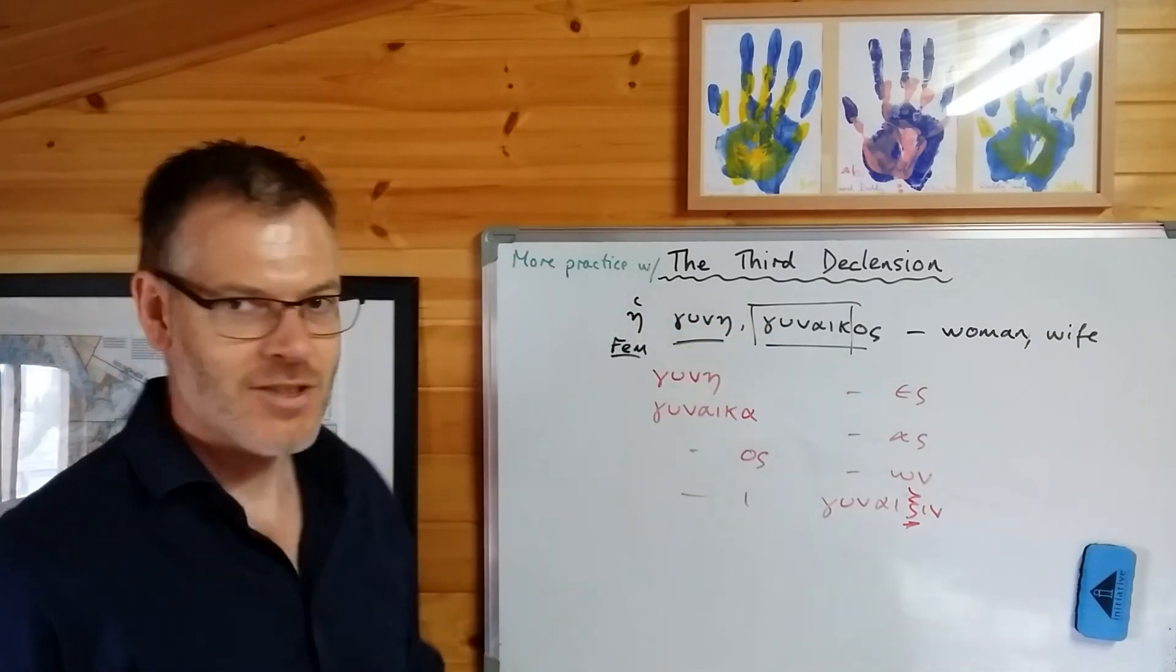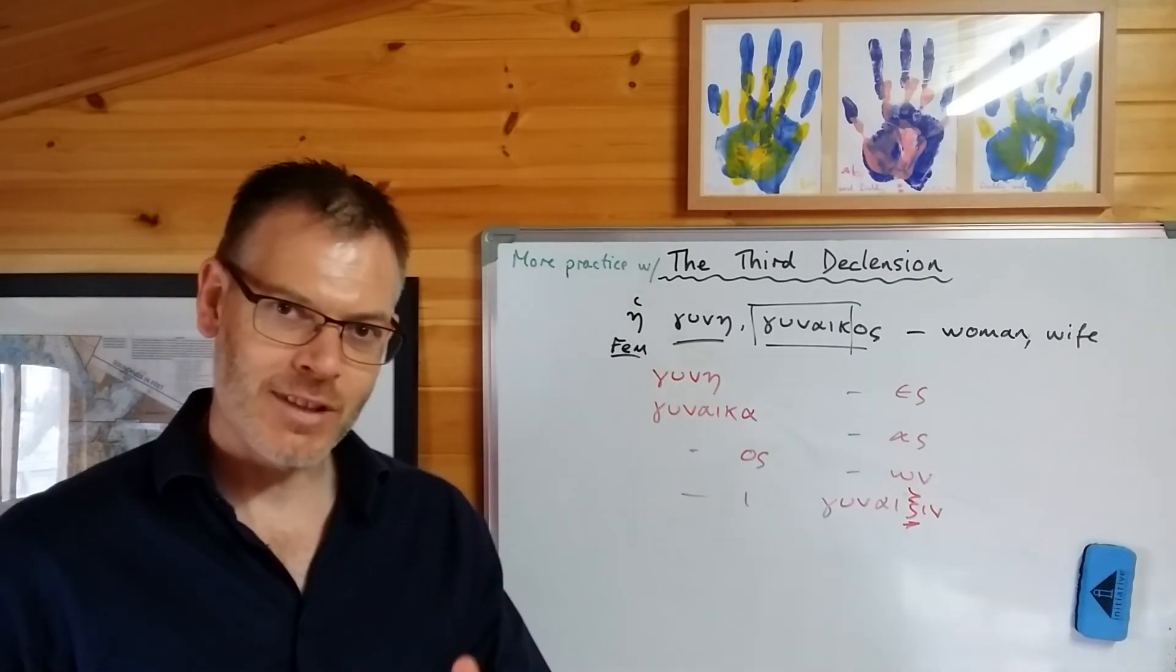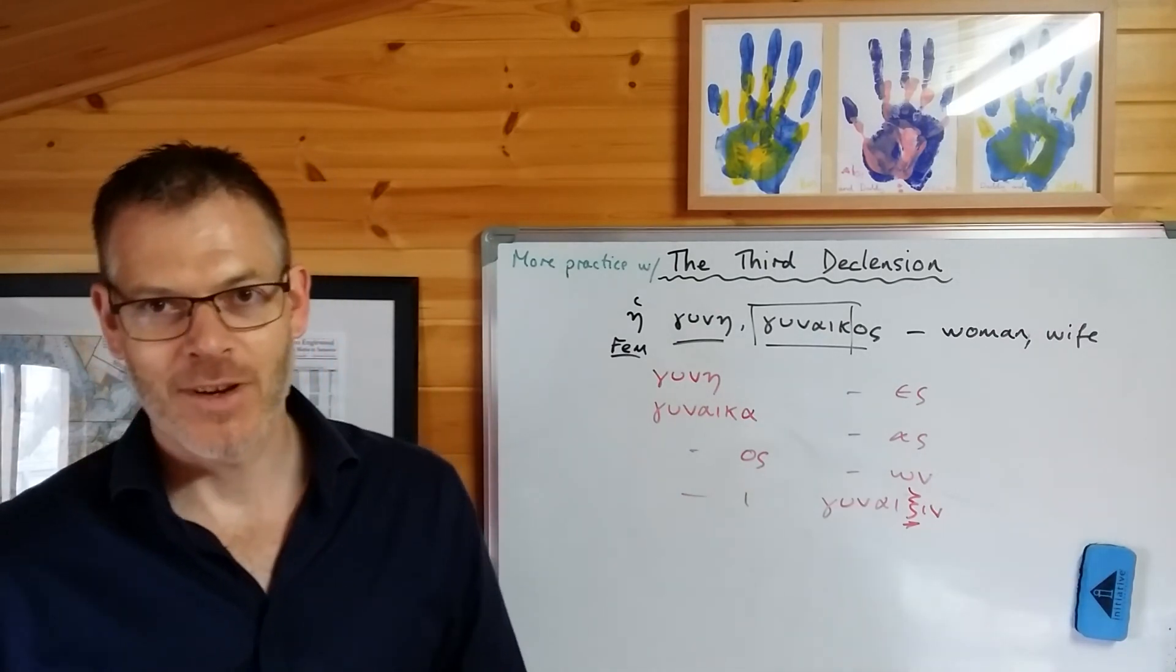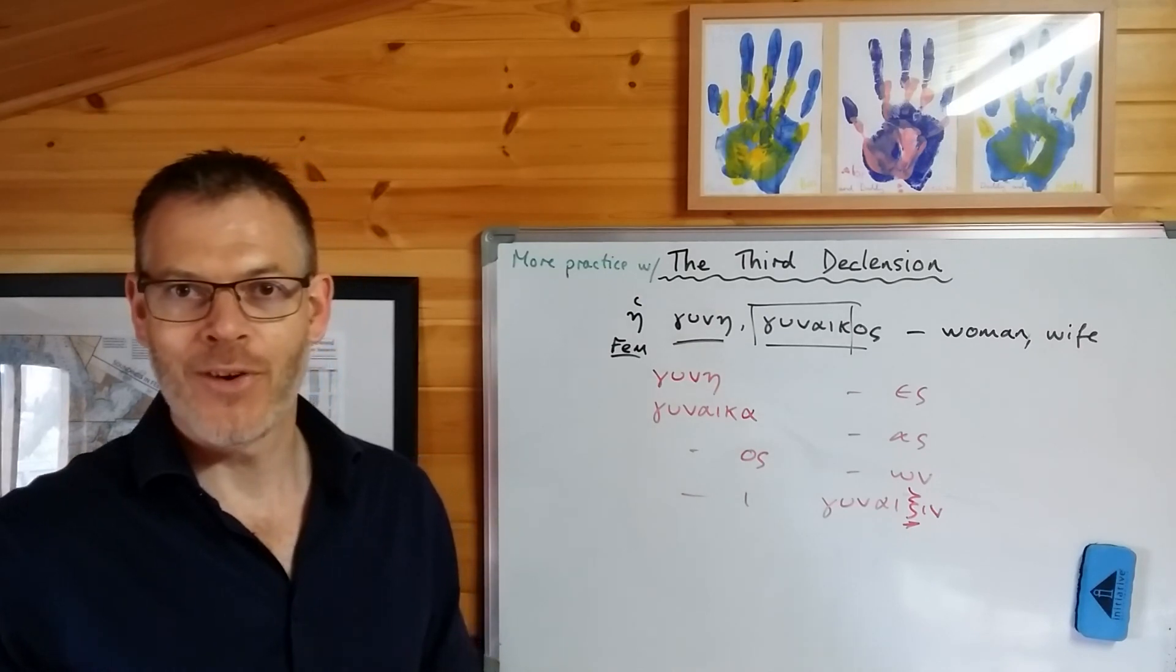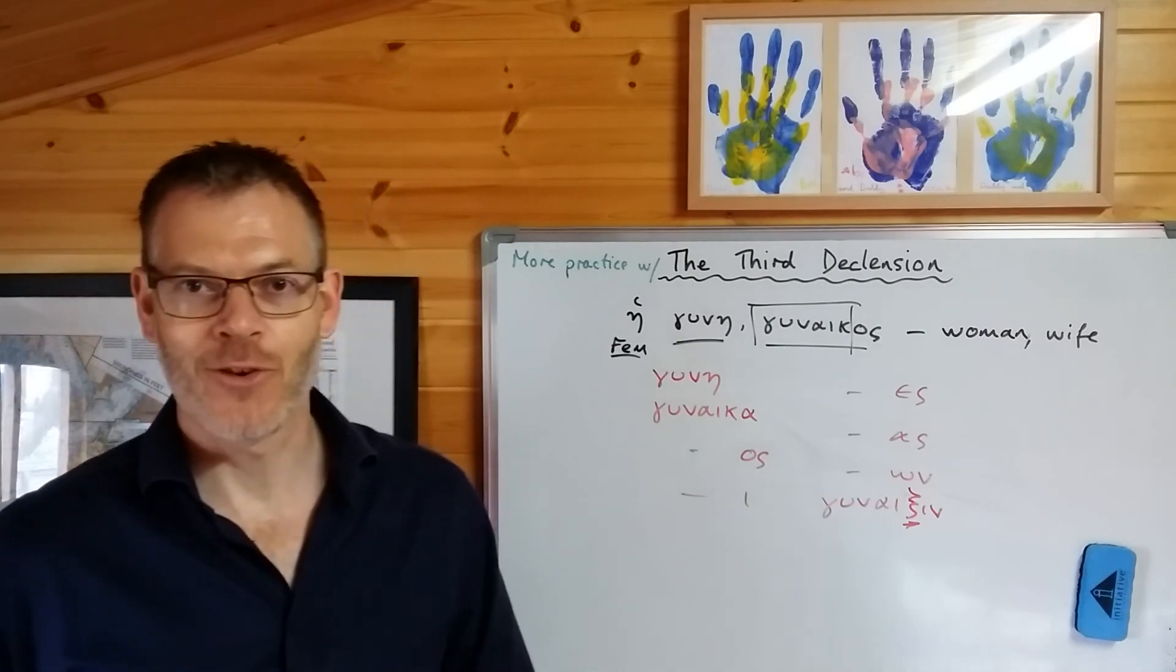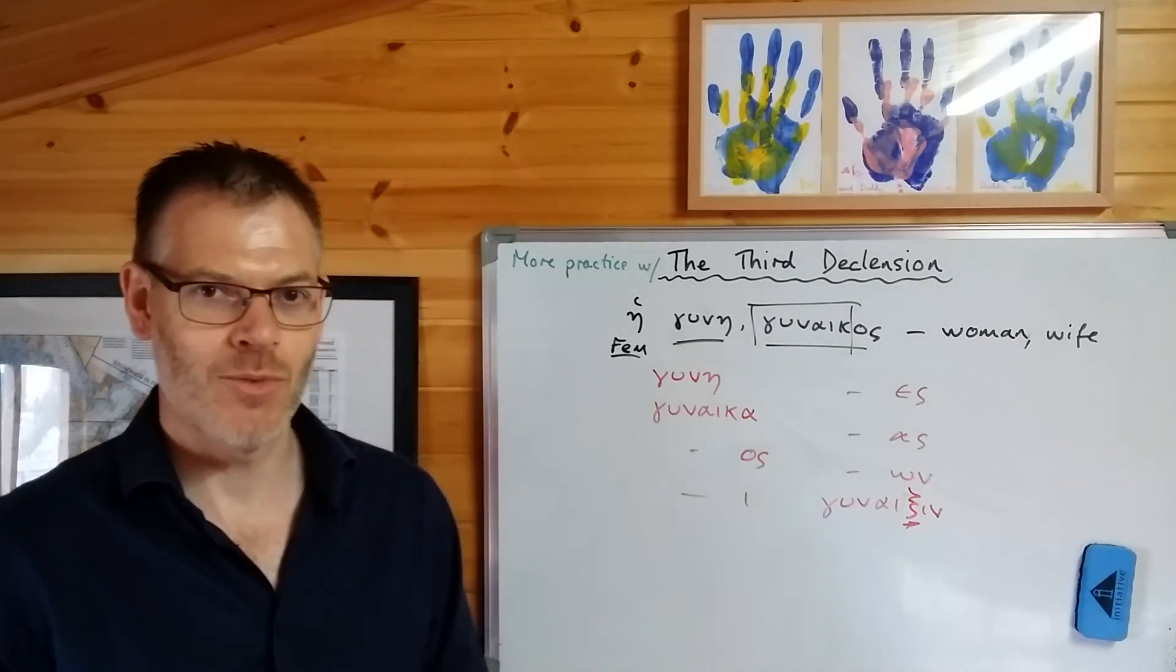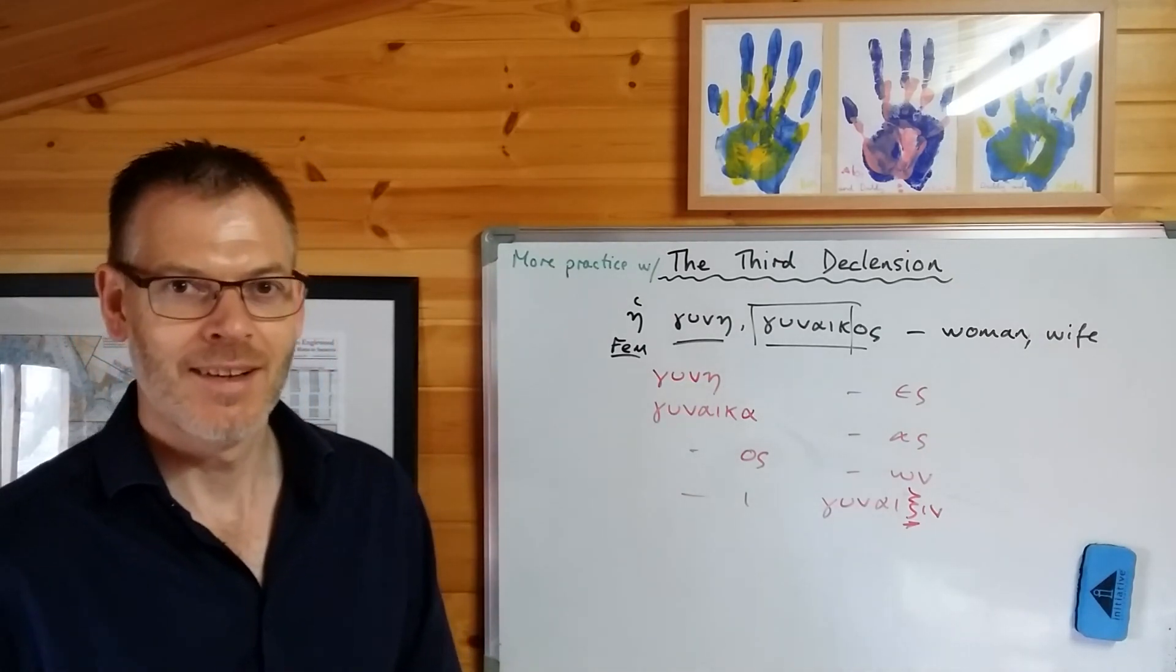You know how to generate the full declension from the lexical form of the noun. Come back in the next video, we're going to look at a couple of irregular forms of the third declension noun, and then we're going to go straight on and look at neuter forms of the third declension noun. Keep going, 20 minutes a day, 30 minutes a day, five or six days a week, and we'll nail this and have you reading the New Testament in Greek in no time at all. God bless and bye for now.